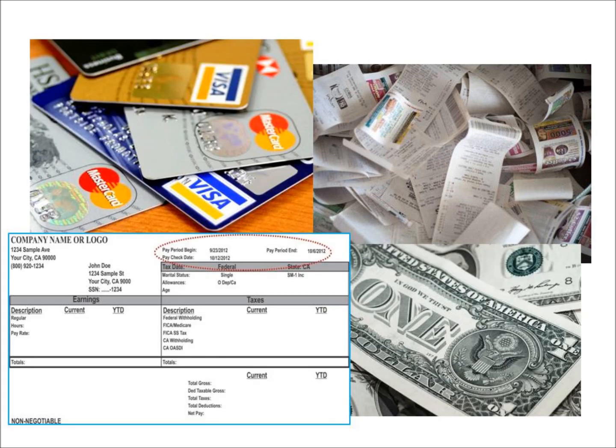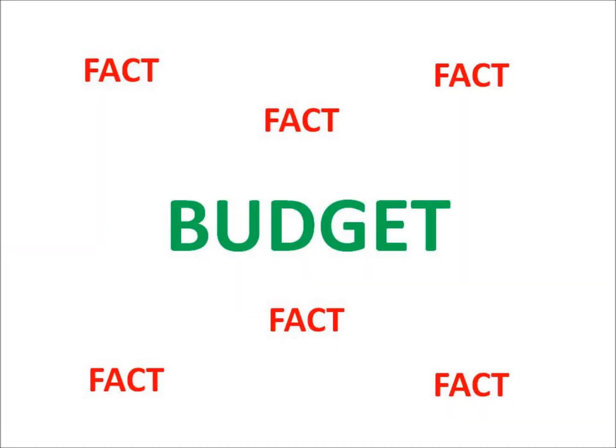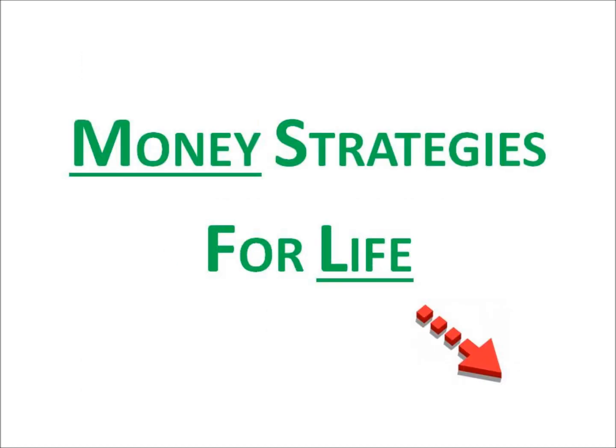Expenses and income fluctuate over the course of a life. Some of the biggest financial impacts you won't see coming. Developing a budget based on facts is one of the best money strategies for life.